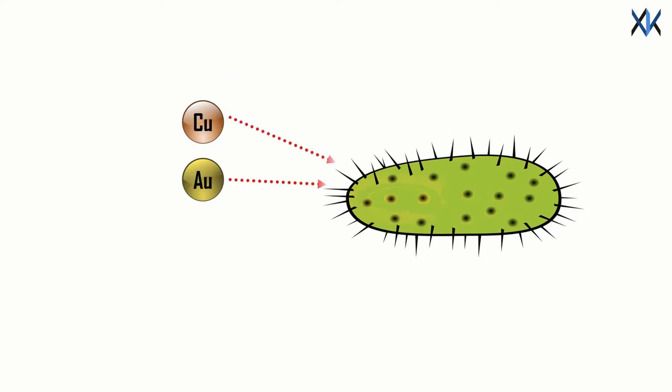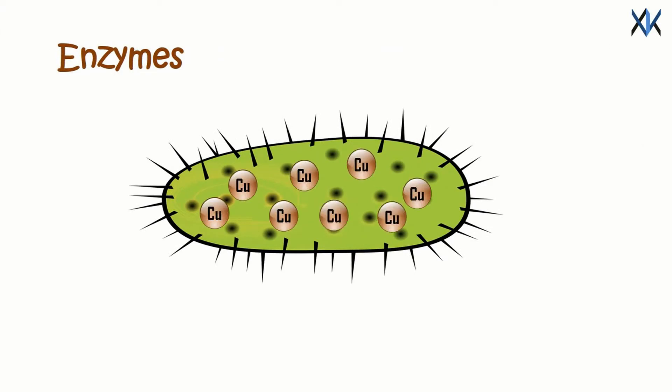When the copper and gold particles come into contact with the bacteria, a range of chemical processes occur. Copper usually occurs in a form that is difficult to be digested, so it is converted to a form that is considerably easier for the bacterium to import, and thus is able to reach the interior of the cell. The same also happens to the gold compounds.